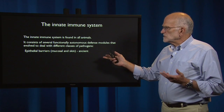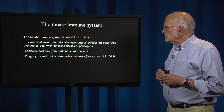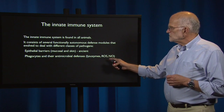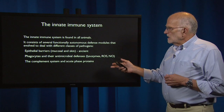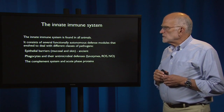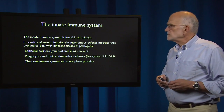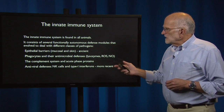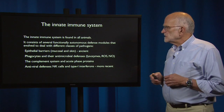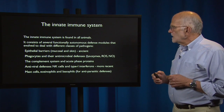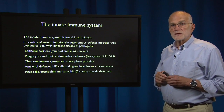The epithelial barriers — mucosa and skin — are ancient. Phagocytes and their antimicrobial defenses such as lysozymes, reactive oxygen species, and nitrous oxide are also ancient. The complement system and the acute phase proteins are proteins found in the blood that can coat pathogens and inactivate them. Antiviral defenses include natural killer cells (NK cells) and type 1 interferons; these have evolved a bit more recently. Mast cells, eosinophils, and basophils are cells that defend us against parasites like worms.